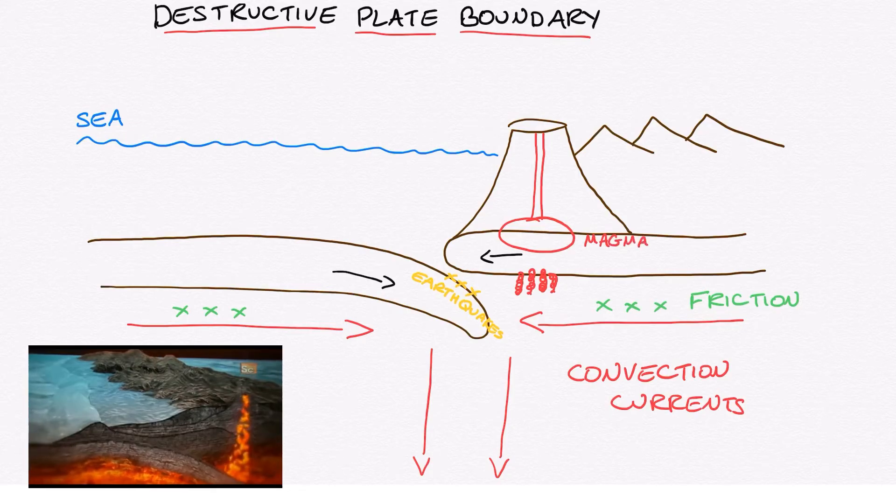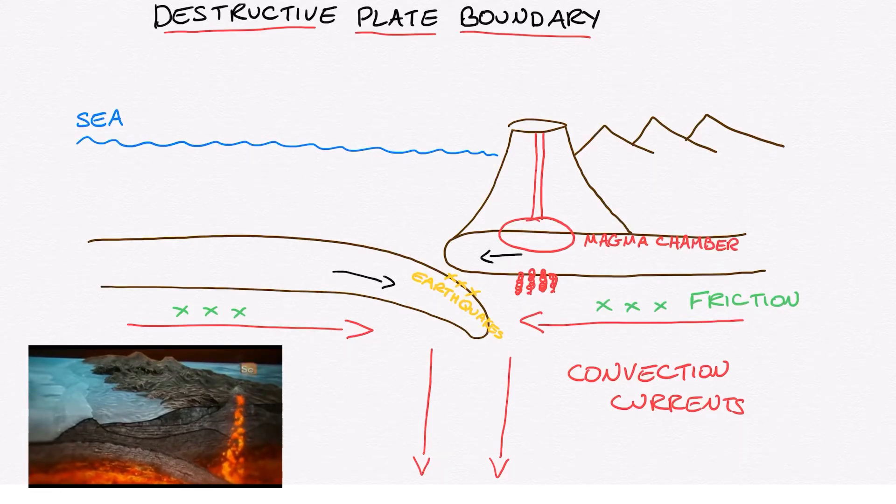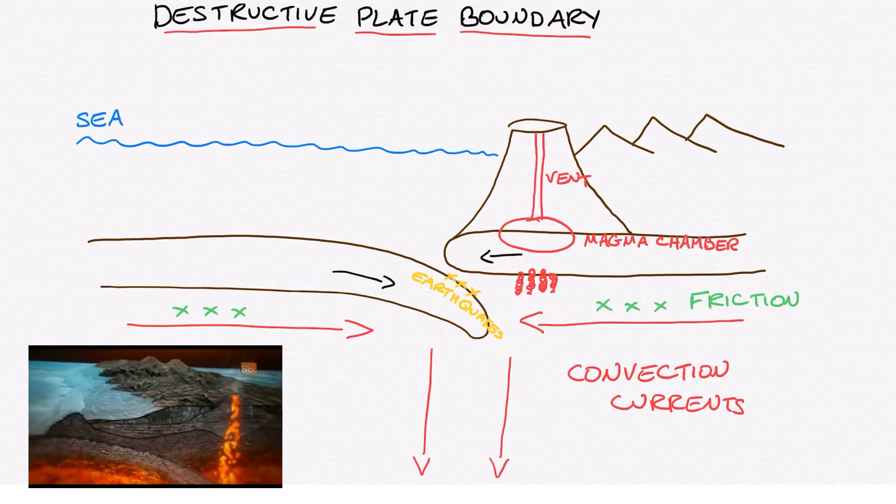For example, Mount St. Helens is one of these volcanoes that occurs on the continental plate in a destructive plate boundary. Then this volcano erupts, the lava rises up through the vent and explodes in a volcanic eruption.